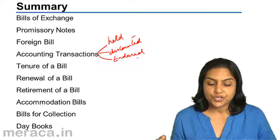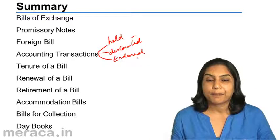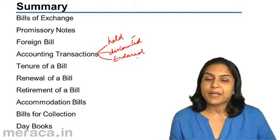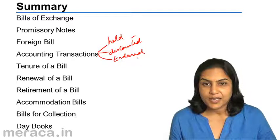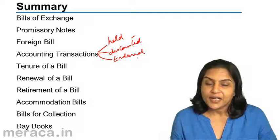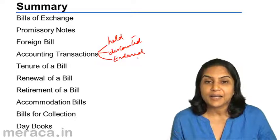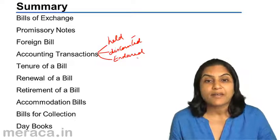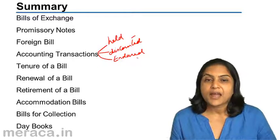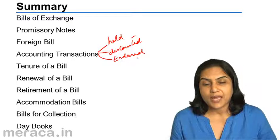Next, we understood the retirement of a bill, which is payment of a bill before the date of maturity. When payment is thus made, the debtor is entitled to an interest element for the early payment, and that is called a rebate. It is an income for the payer and a discount expense in the books of the payee.